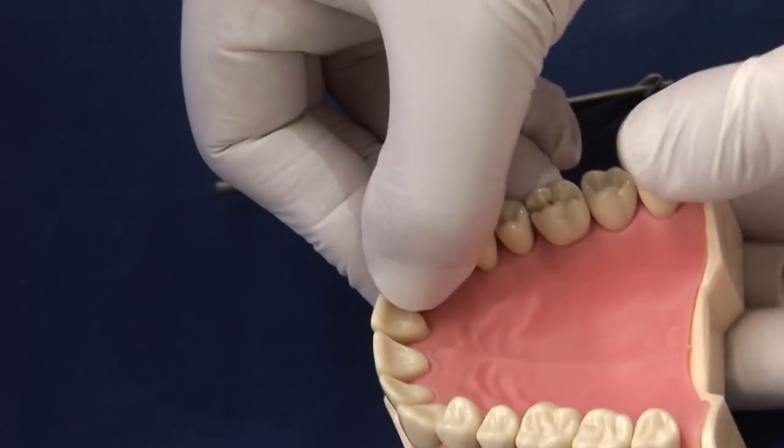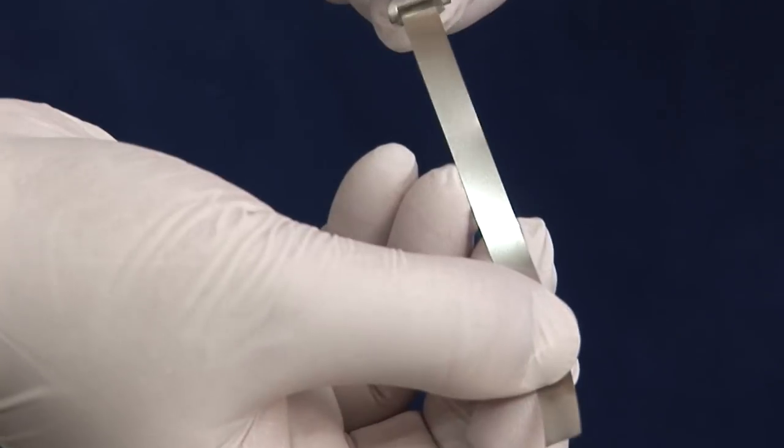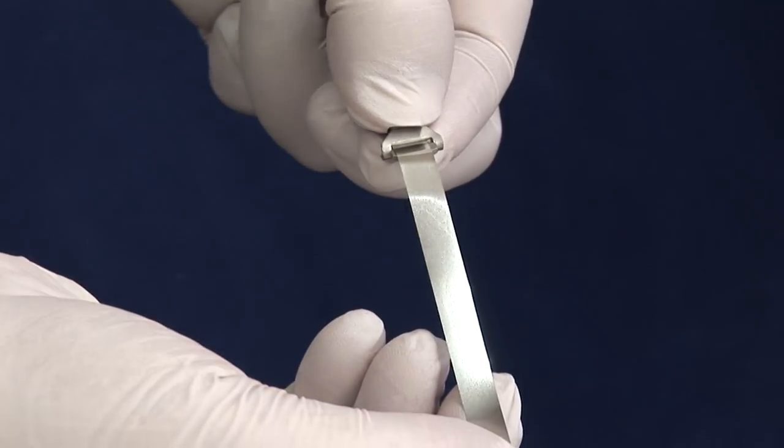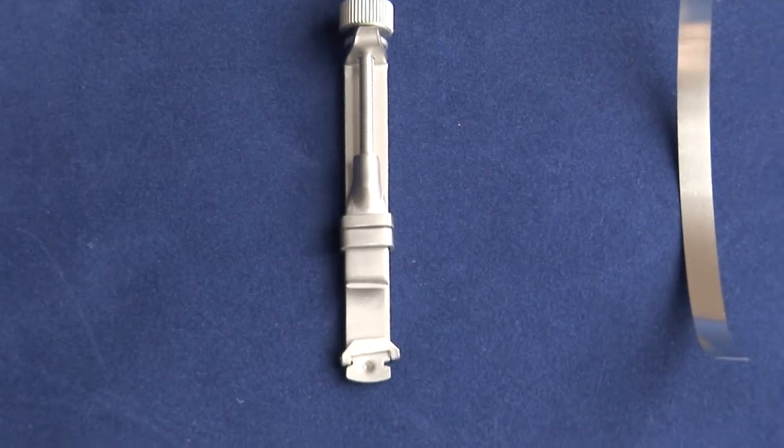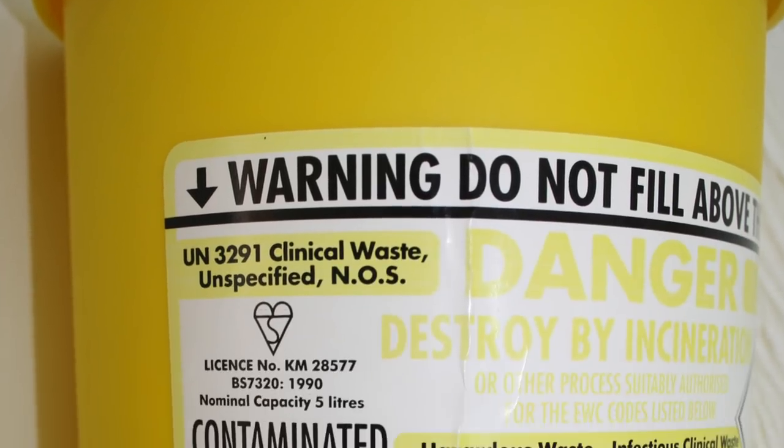Unwind the matrix band in the reverse order to the application. Remove carefully, remembering the sides of the matrix band can become sharp. Place the matrix band in a sharps bin.